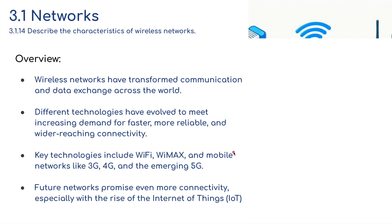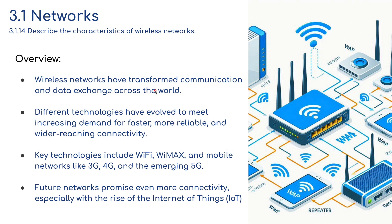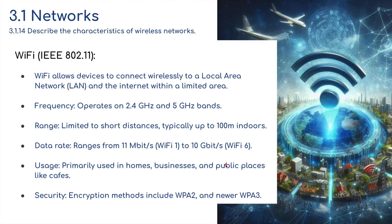Wireless networks transform communication and data exchange across the world. We've talked about wireless networks in a previous video covering repeaters and how to build a wireless network. Now we need to look at the different technologies that evolved to meet increasing demand for faster, more reliable, and wider-reaching connectivity. Key technologies include Wi-Fi, WiMAX, and mobile networks — 3G, 4G, and 5G. Further networks promise even more connectivity, especially with the rise of the Internet of Things.